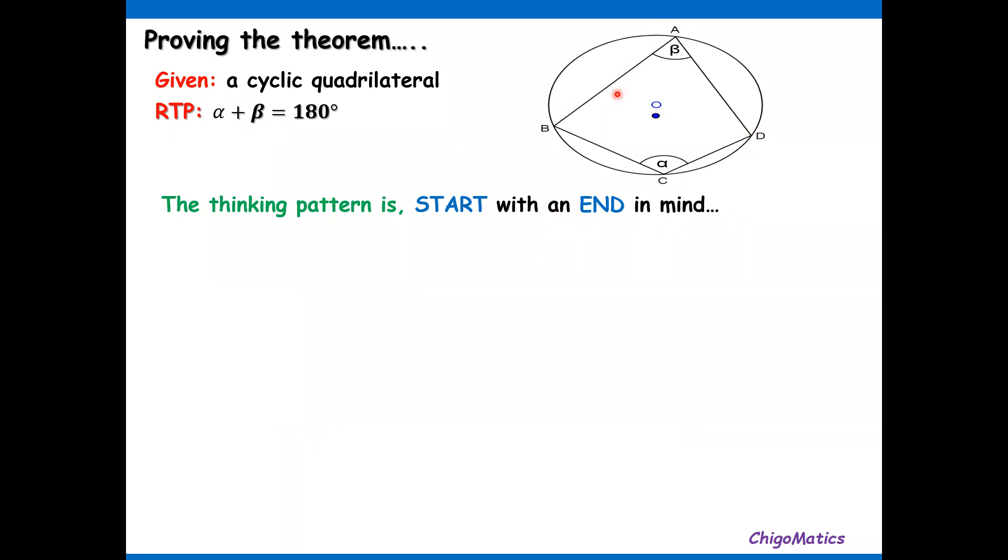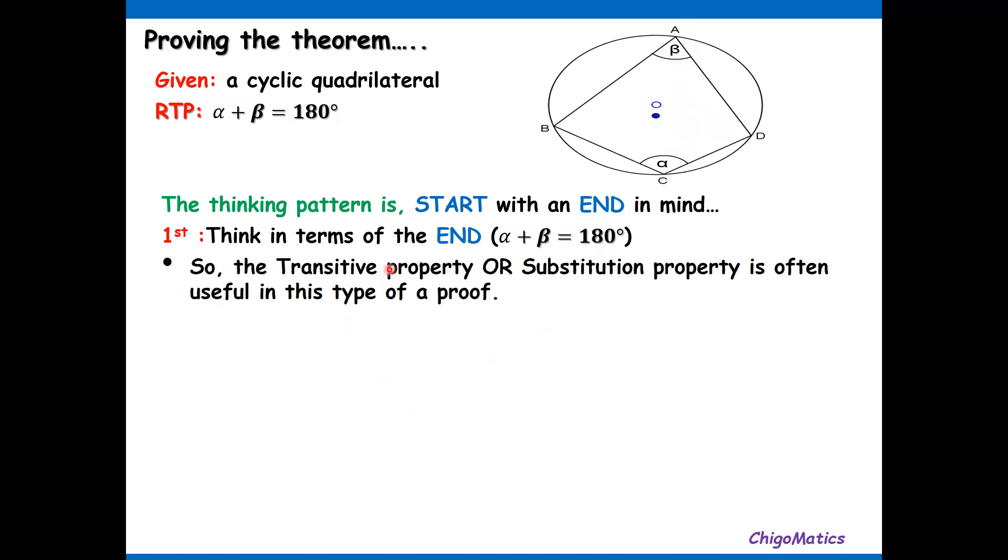This is the diagram that we are given. So first, thinking in terms of the end where we want to arrive at is alpha plus beta equals 180. That is where we want to arrive. So the transitive property or substitution property is often useful in this type of proof.